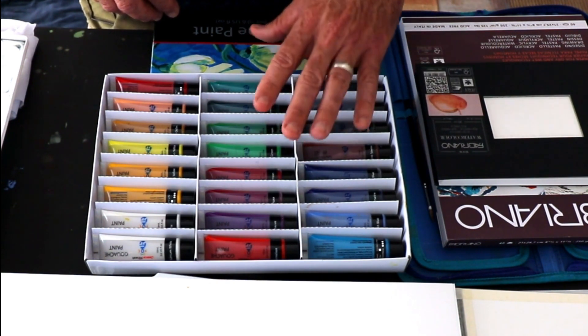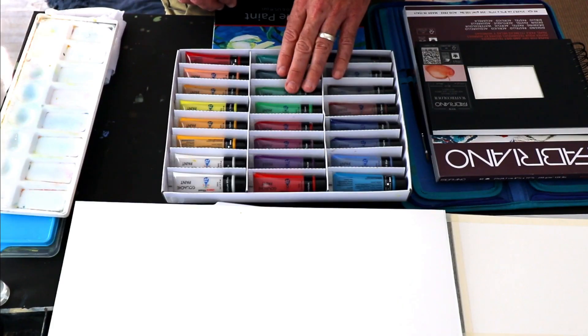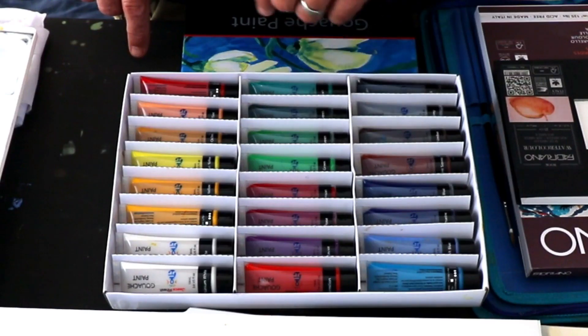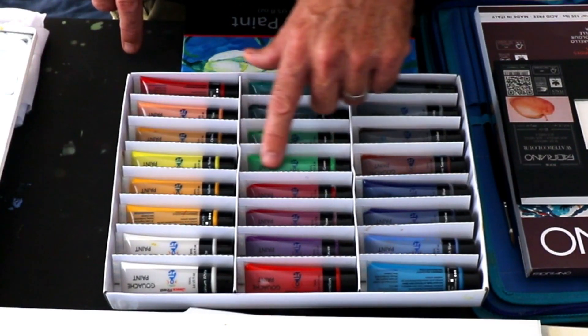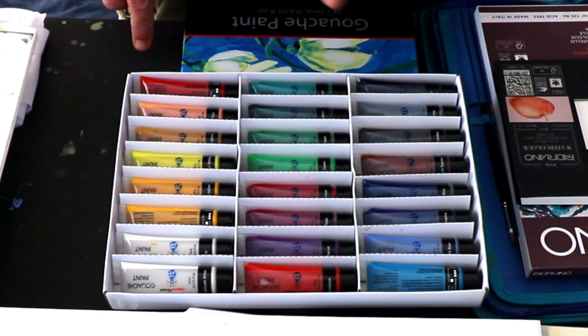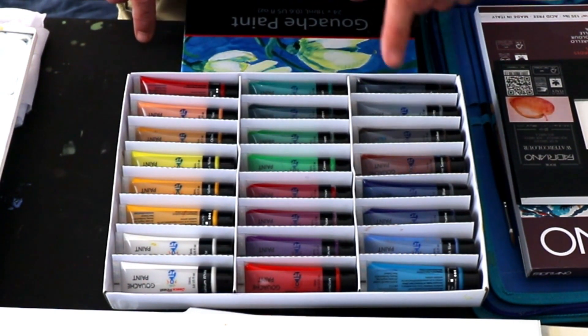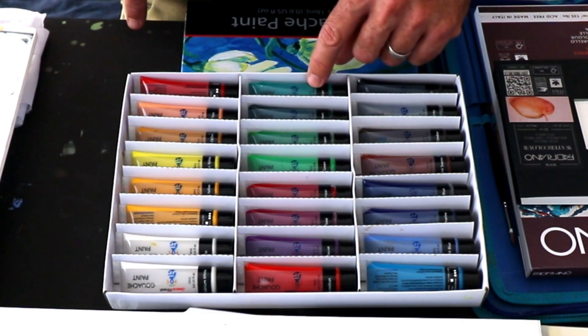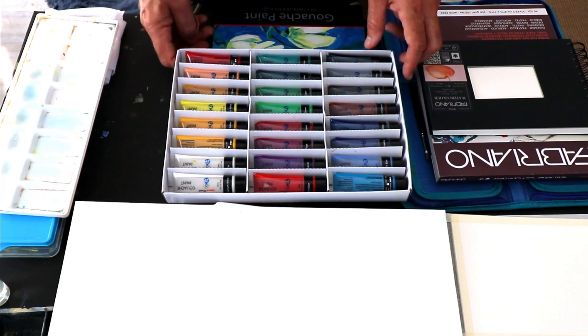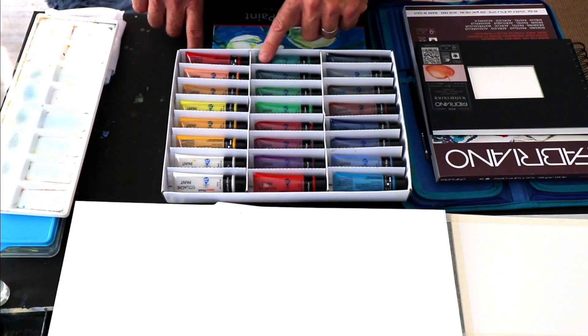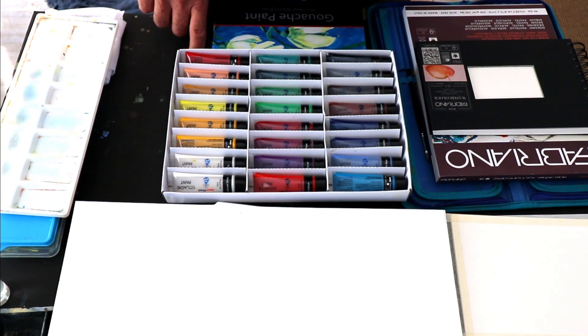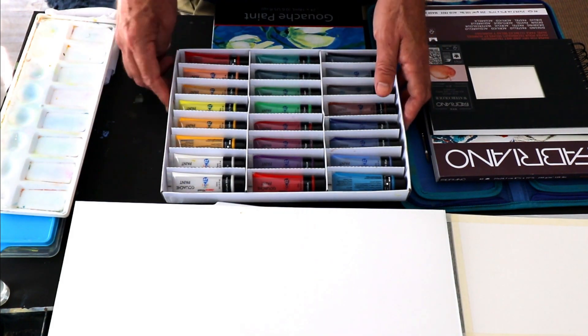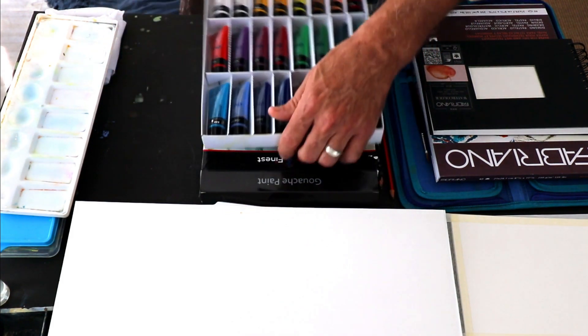I seldom use green out of a tube, but depending on the subject you're painting, a nice powerful green like this pale green over here would be very nice to have. And also sometimes a viridian green comes in useful when you are doing a seascape. So I would use that as well. And that's it. Pretty much everything you need colour wise you'll find in this set.